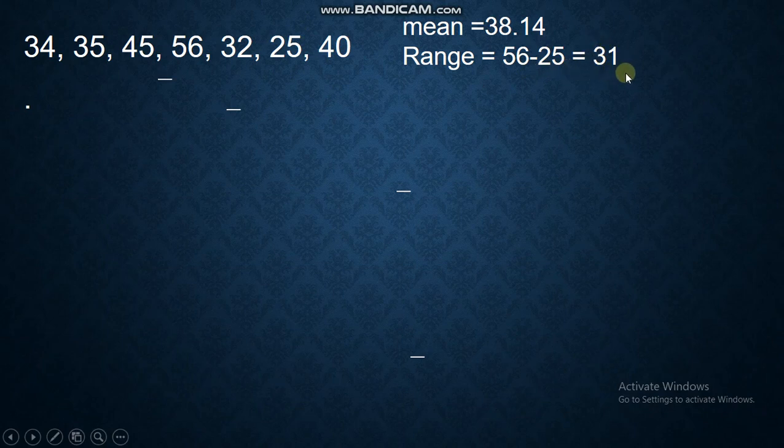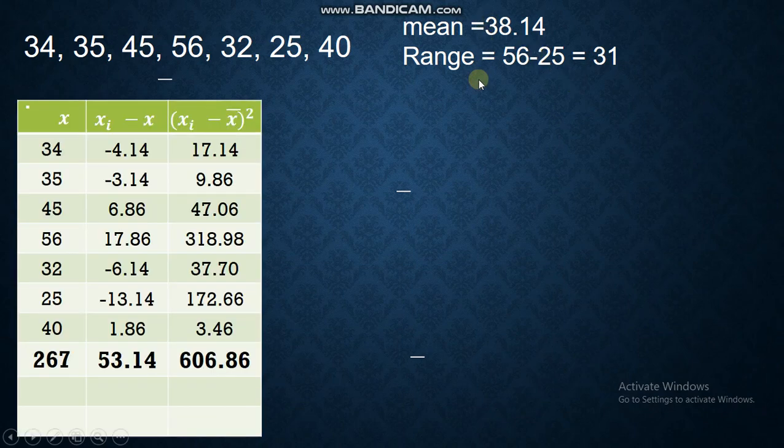Now, since we have the mean, we can now create the table. So, this is the table. You have x, this is for your score or for your data. And then, 267 is the total.